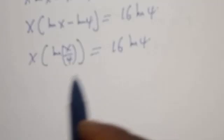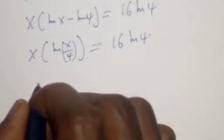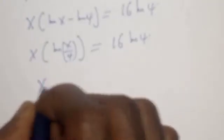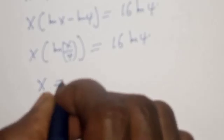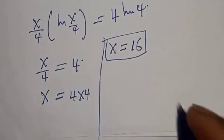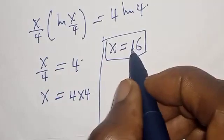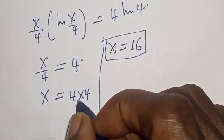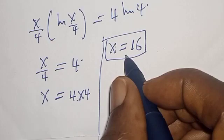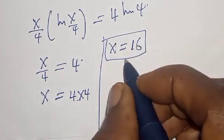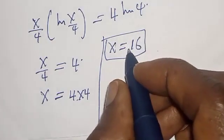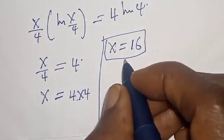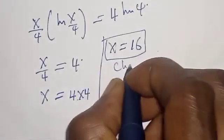Now if we check this, s is equal to 16 — that is 4 times 4, which is 16. That is the value of s. Now we can check to confirm if our answer is right. Let's verify.